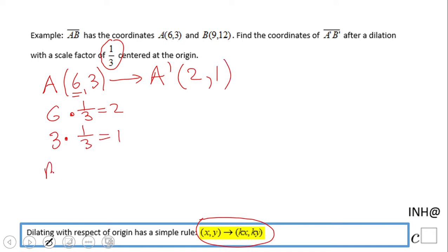What about B? B, same story. We have (9,12), and B prime will be what? 9 times 1 over 3 will be 3. 12 times 1 over 3 is 4. And that's it. Those are the answers for this problem.